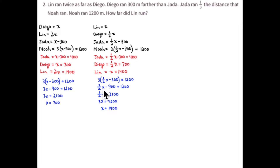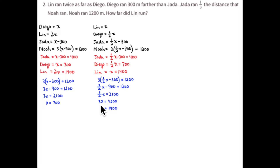So three-halves x — using the distributive property — three-halves x minus 900, where three times 300 is 900, equals 1,200. Add that 900 and you get 2,100. Three-halves x equals 2,100. So three x equals two times that amount, and x equals one-third of 4,200, or 1,400 meters for Lin.